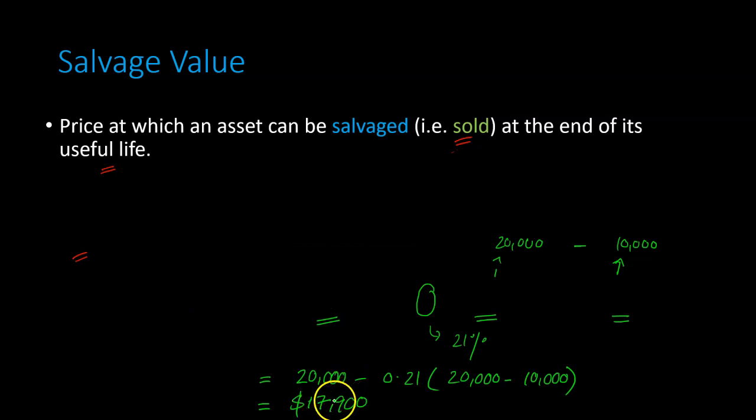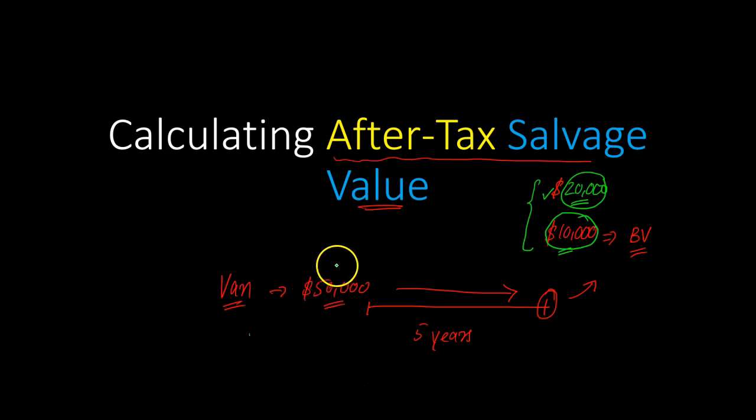And so if you go back now and you're thinking about, hey, should I buy this van for $50,000 today? And what I'm saying to you is that while you will consider all the different cash flows that you will get from this van over the next five years, at the end of five years, one of the things that you're going to get from selling the van is not $20,000, which is what you're expecting to sell it for about $17,900. And so this is the after-tax salvage value and the number that you should account for in your capital investment decision.